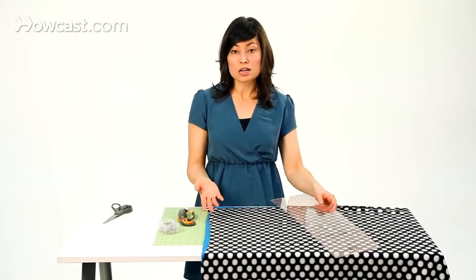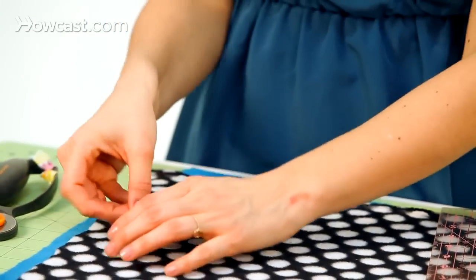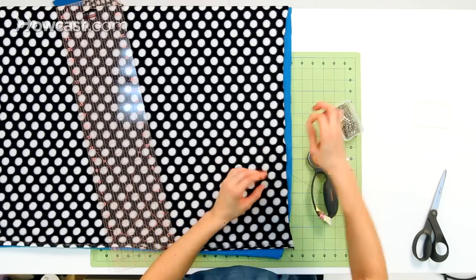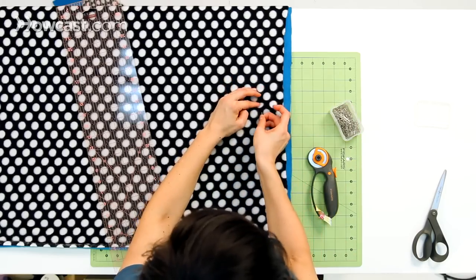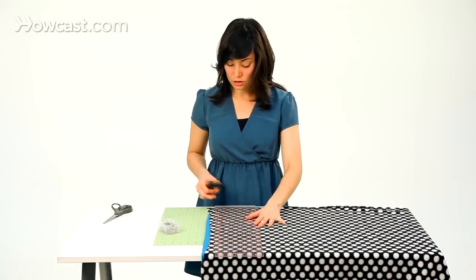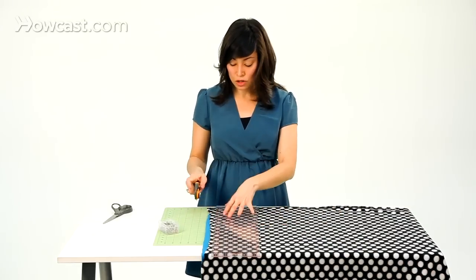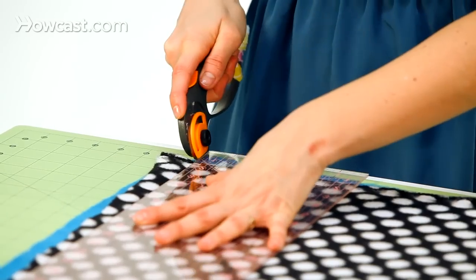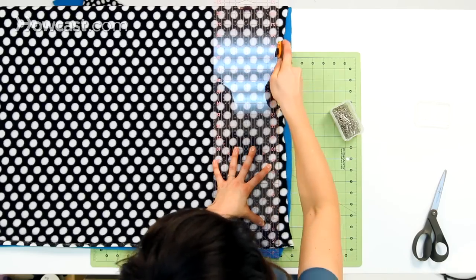Now if you're uncomfortable just laying your fabric out and doing it freehand, you can always use some pins to pin your fabric in place so it won't move before you make your cut. So just line up your scissors or your rotary cutter and chop off the uneven portion.